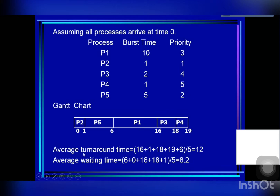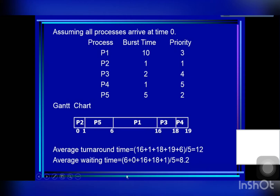We also calculate the average turnaround time and the average waiting time. For the turnaround time of each process, we use the finished time minus its arrival time. Because all processes arrive at time zero, we get the turnaround time directly. For waiting time, we use turnaround time minus its CPU burst time to get the waiting time for each process.